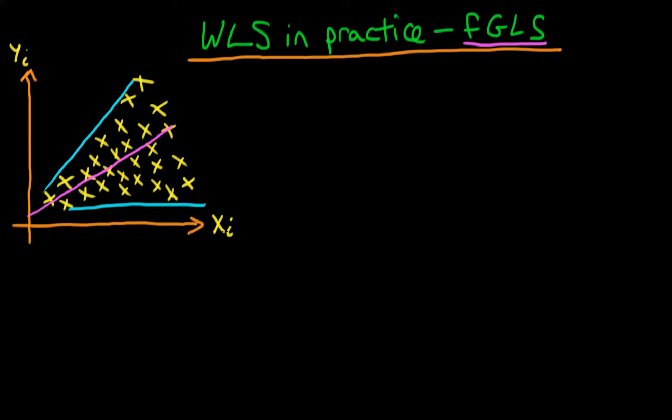We spoke about how we could actually use an explicit form of the variance if we knew it, which was equal to sigma squared times xi, and we used this particular variance in order to generate weights which we then used to transform our model to a system whereby we could then use OLS on that transformed system and we would have homoscedastic errors.